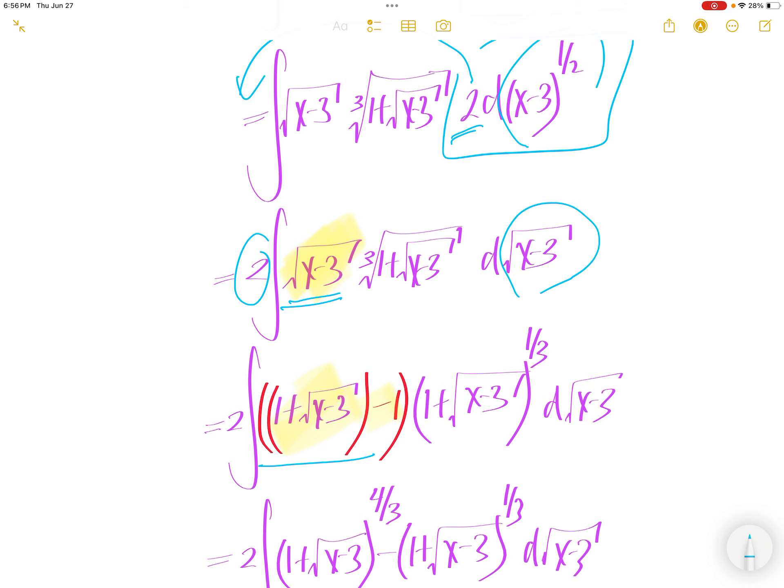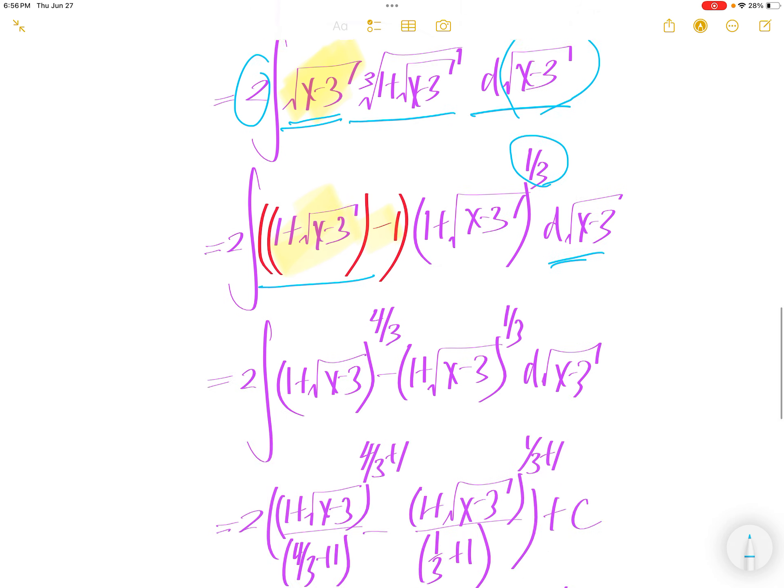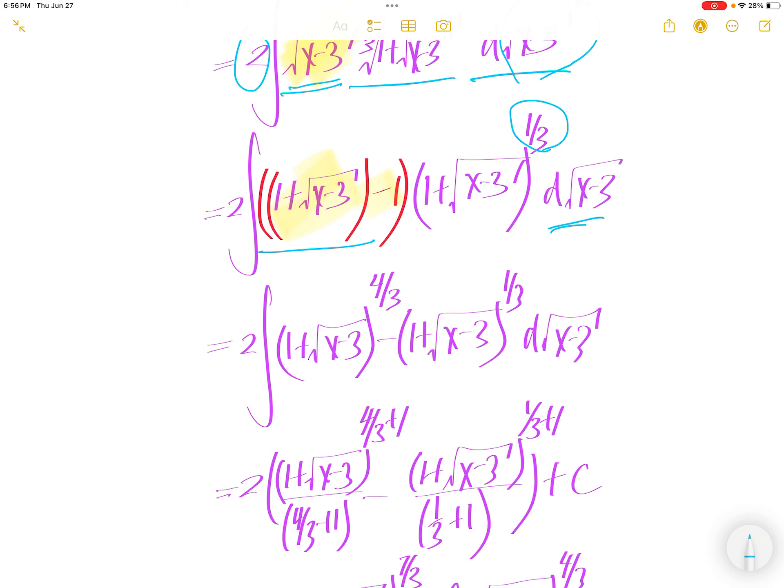1 and minus 1 cancel. You get square root x minus 3. And then write this as 1 plus square root x minus 3 to the power of 1 third. And this is derivative square root x minus 3.